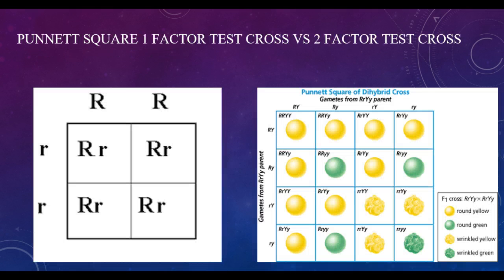So what is the difference between a Punnett square, what we call a one-factor test cross, versus a two-factor test cross? On the left here, we have a Punnett square. This is a one-factor test cross. We're dealing with one type of gene or one trait.